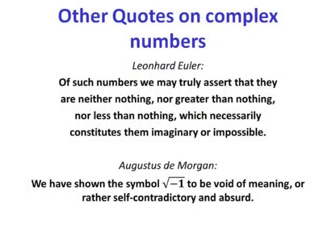Cardano concluded: 'So progresses arithmetic's subtlety, the end of which is as refined as it is useless.' Euler wrote of complex numbers that 'we may truly assert that they are neither nothing nor greater than nothing nor less than nothing, which necessarily constitutes them imaginary or impossible.' Augustus De Morgan, Professor of Mathematics at University College London, declared the square root of minus one 'void of meaning or rather self-contradictory and absurd.'